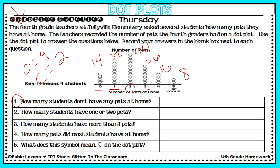Question one: how many students don't have any pets at home? That means zero pets, and I know that was 14 students. Question two: how many students have one or two pets? On questions like this you have to look at more than one piece of data. One pet was 32 students, and two pets was 44 students. So I have to take 32 plus 44 — I'll let you do that on your own to find the sum.